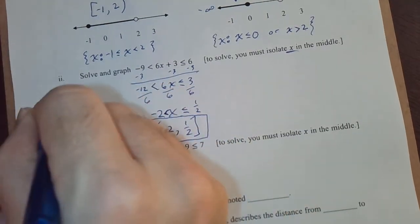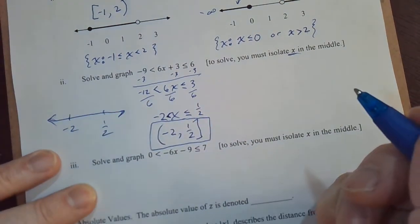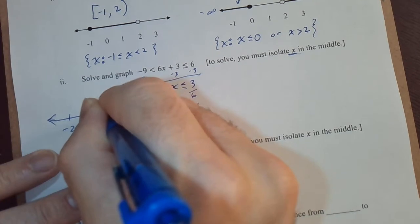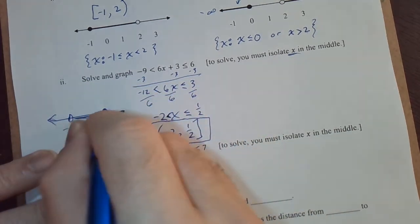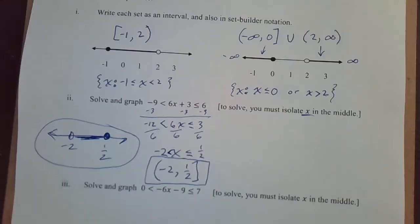Maybe I'll put the graphed solution over here, but it's quite easy. It'd be solid on the right, open on the left, shade everything in the middle. Two different ways to write the solution.